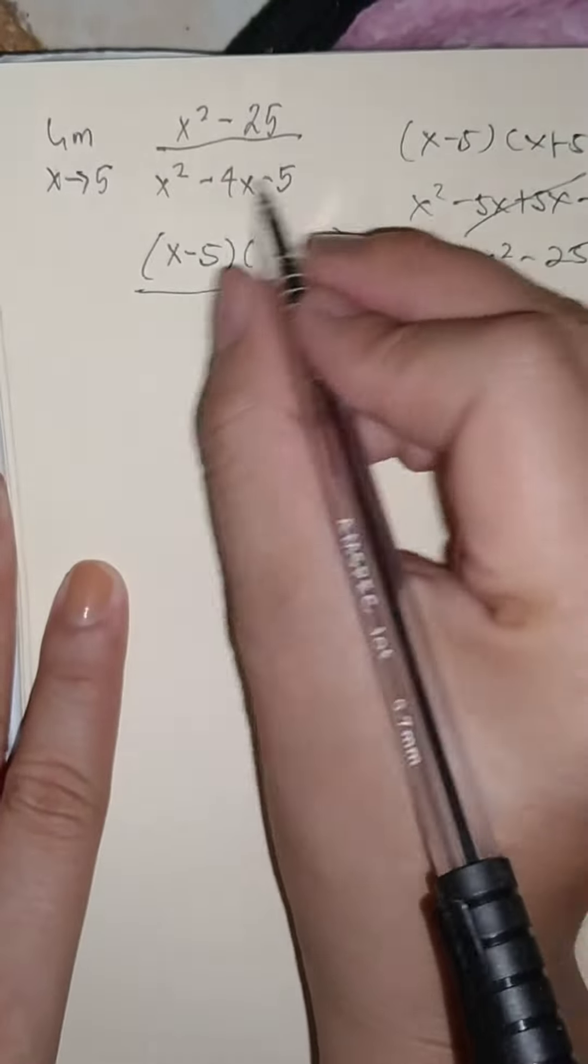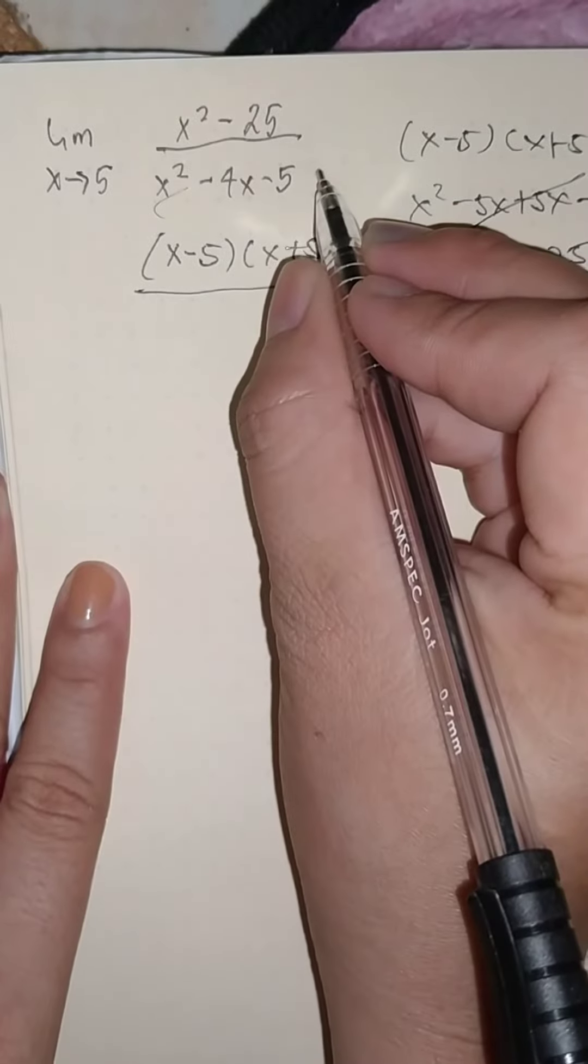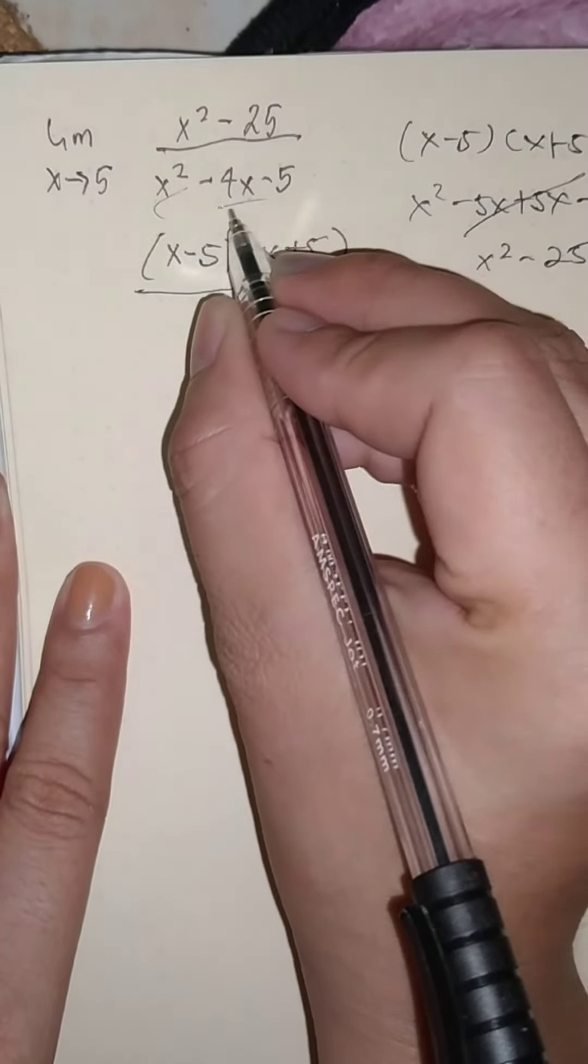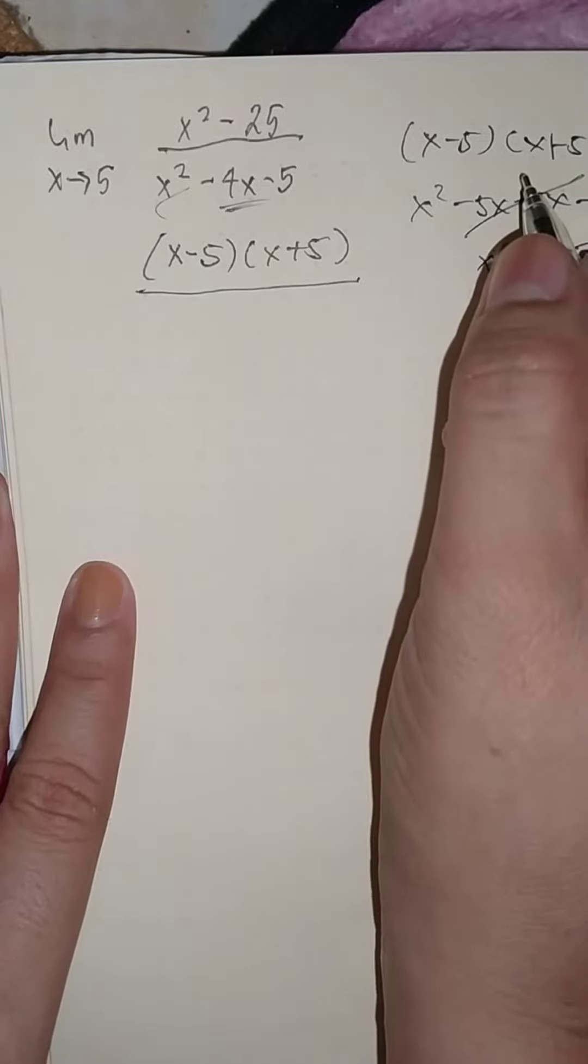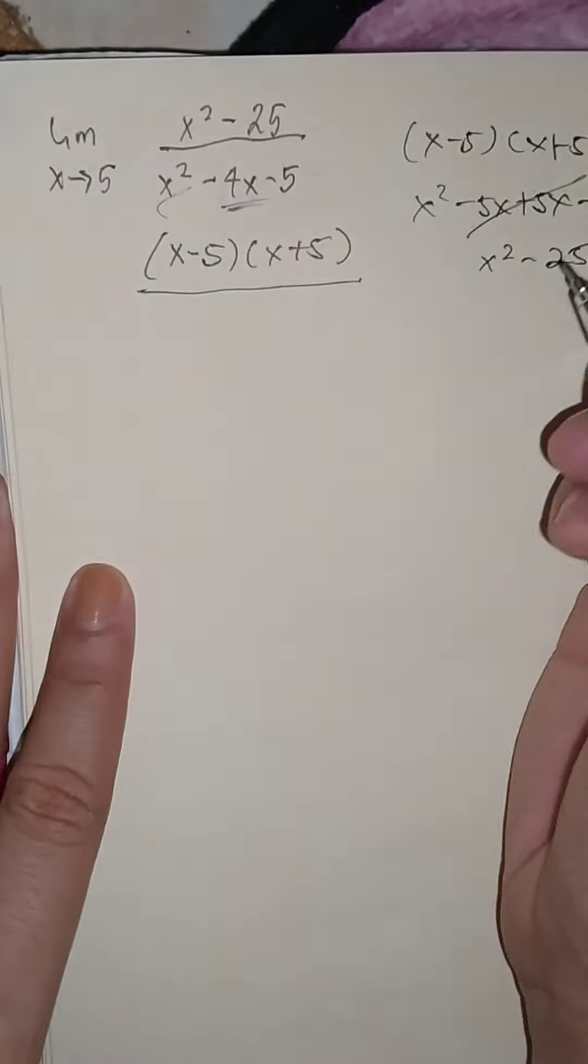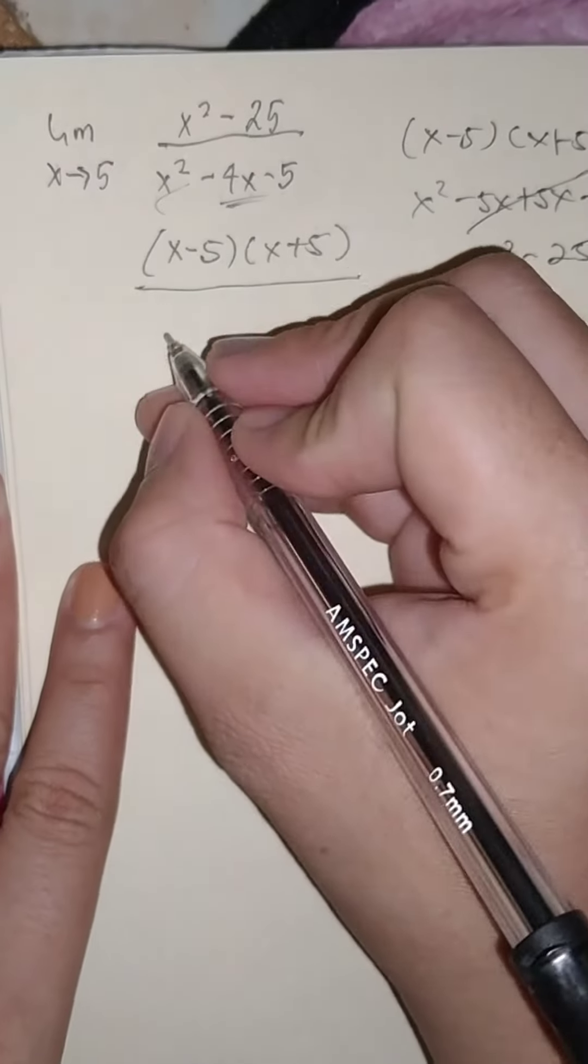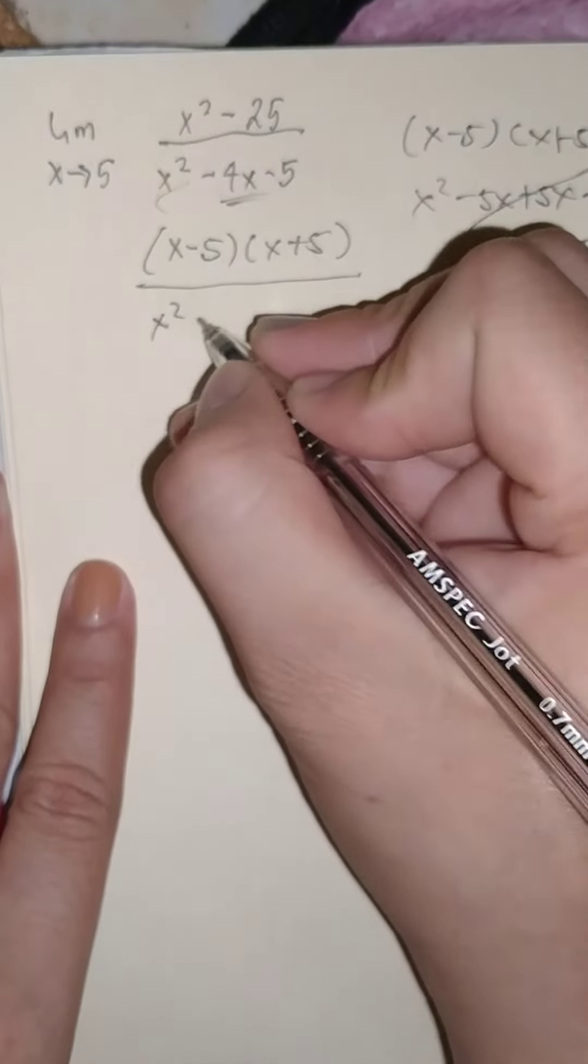However, in this one we have to do something about this one. So what are the two numbers that would sum up to 4x? Think of a number.